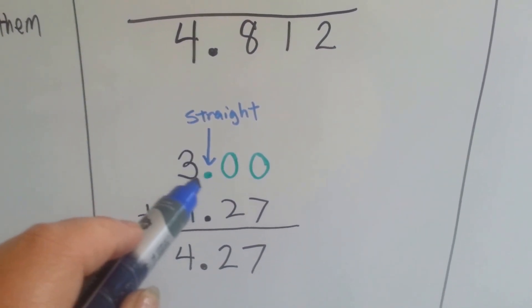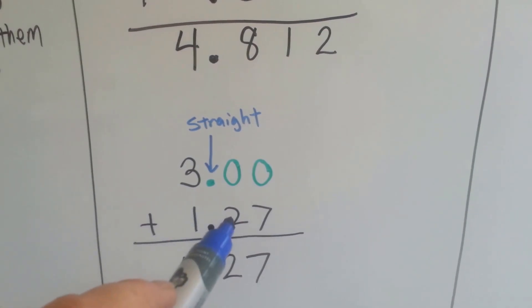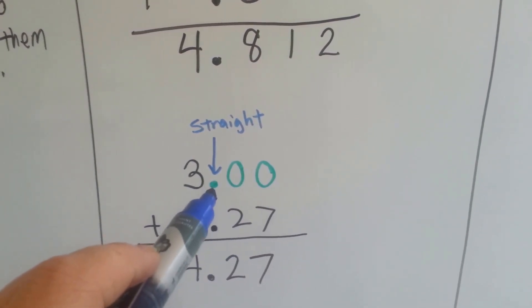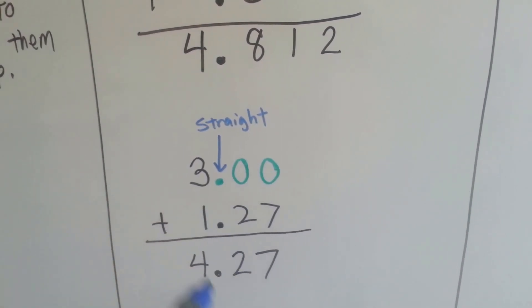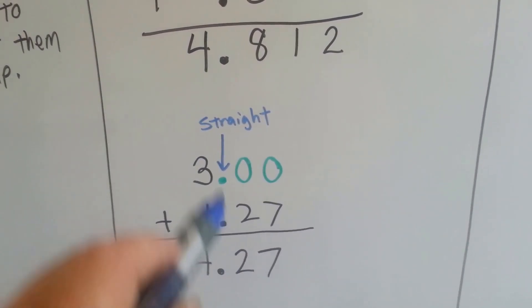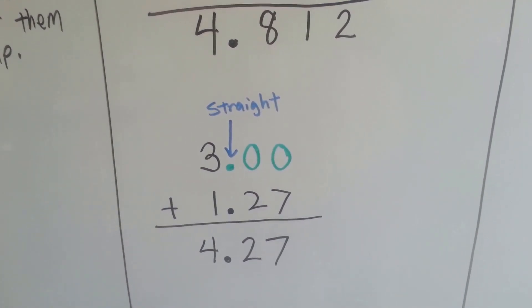We can do it this way even if there's no decimal point. If we're adding 3 to 1 and 27 hundredths, we can put in a decimal point and the zeros to help us. 7, 2, and 3 and 1 is 4. We keep this all straight and pretty and perfect, and we have 4 and 27 hundredths.